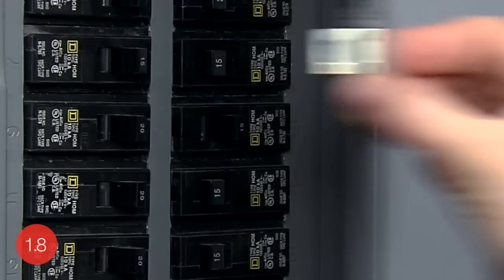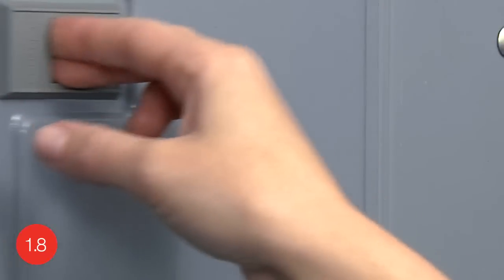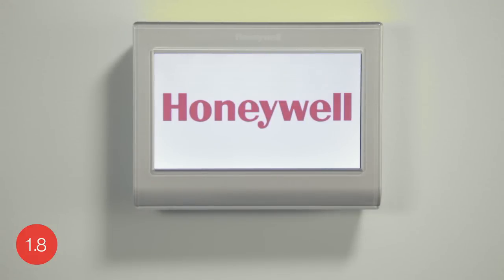Switch the power back on for your heating and cooling system at the circuit breaker box or the system switch. This should power up your thermostat's display to begin the initial setup.